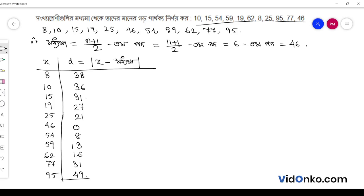So the summation of D equals 270. Therefore, summation of D by n equals 270 by 11, which equals 24.55. Please reach out for the next page.